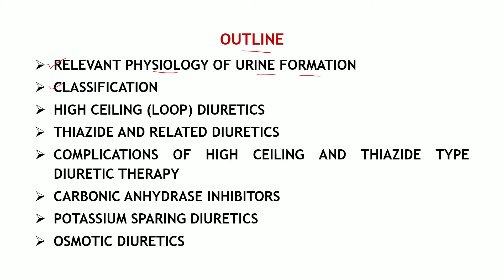We shall discuss three main classes: the first is high ceiling, also known as loop diuretics. The second class is thiazide and related diuretics, also known as medium efficacy diuretics. Then we shall discuss complications of the high ceiling and thiazide classes together, as they share certain common adverse effects. Next are the adjuvant diuretics with three subclasses: carbonic anhydrase inhibitors, potassium-sparing diuretics, and osmotic diuretics.